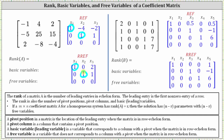Because we have two leading entries, the rank of matrix A is two. The leading entries also indicate the pivot columns — column one and column two are pivot columns. The corresponding variables for these columns are the basic variables, and therefore the basic variables are x sub one and x sub two. The other variables are the free variables; in this case, x sub three is a free variable.